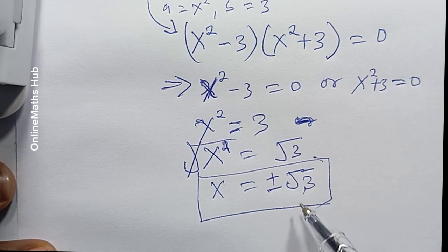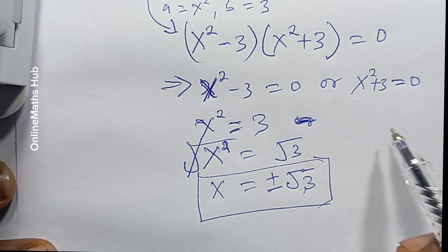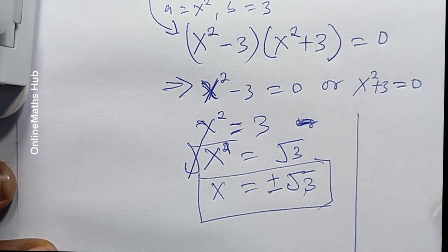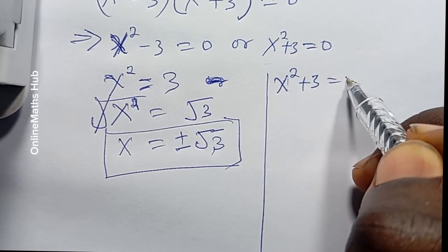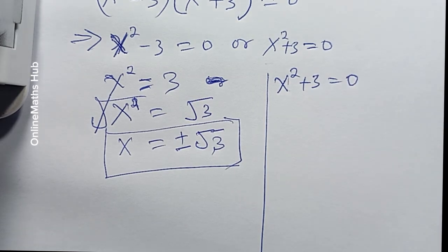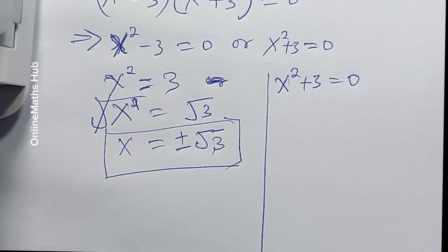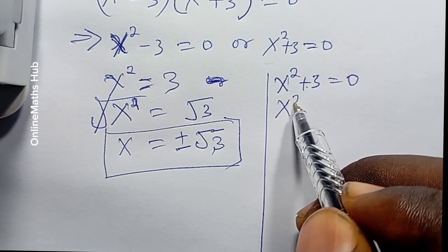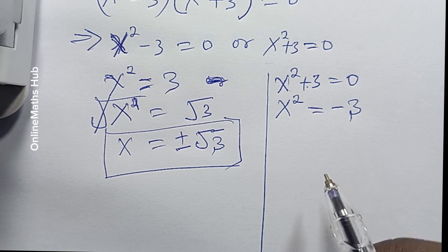The next thing I want to do is simplify the second case, which is x² + 3 = 0. This is actually going to give us a complex root, but that is also a solution to the equation. Subtracting 3 from both sides, we get x² = −3.